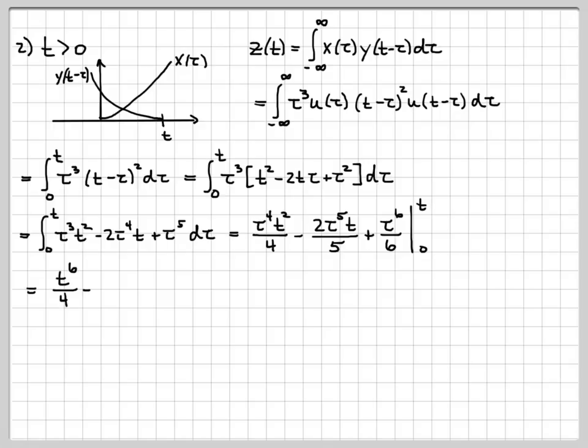So when I plug in t, I get t to the sixth. When I let tau equal t, I get t to the fourth times t squared, which is t to the sixth. Similarly, when I let tau equal t here, I get t to the fifth times t is another t to the sixth. And then plugging in here, when tau equals t, I get t to the sixth over 6. Then I have to subtract off this evaluated at 0. Well, that's just 0.